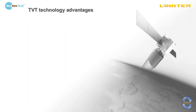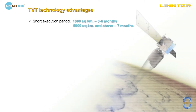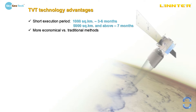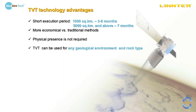This slide provides information on TVT technology advantages. First of all, it has a very short execution period in comparison with any traditional method. For 1,000 square kilometers, roughly we need from 3 up to 6 months, depending on task and complexity. Secondly, it is more economical versus existing traditional methods. We use satellites, so physical presence is not required. TVT can be used for any geological environment and any rock type.